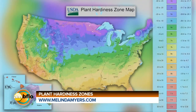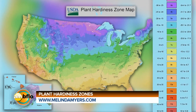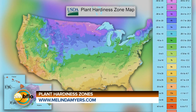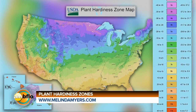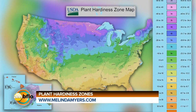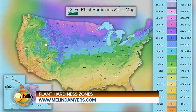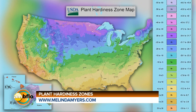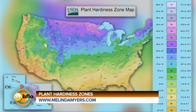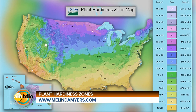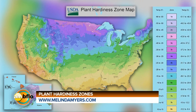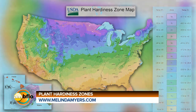Each hardiness zone represents areas within a 10 degree Fahrenheit range of minimum temperatures. This zone is subdivided into five degree segments to more precisely represent that area within each zone. The lower the number, the colder the winter temperatures.